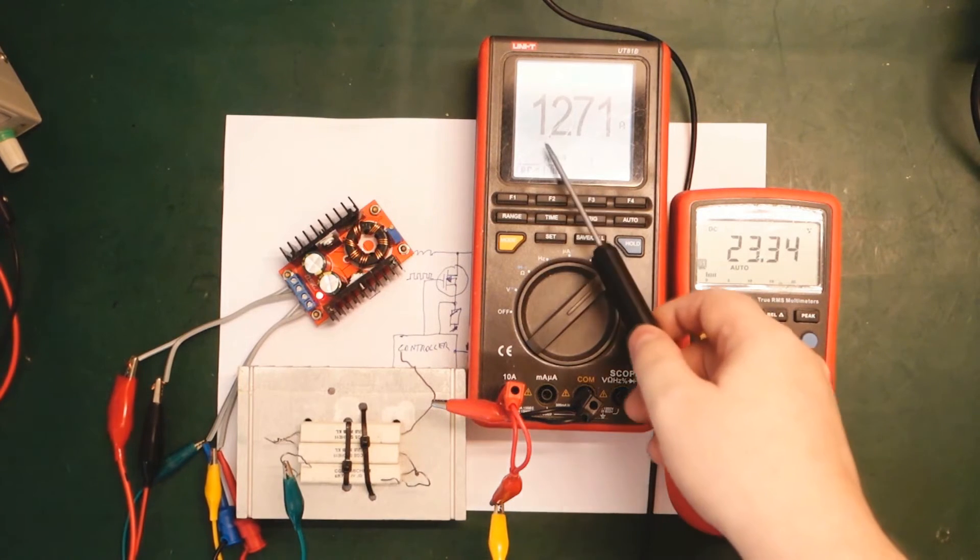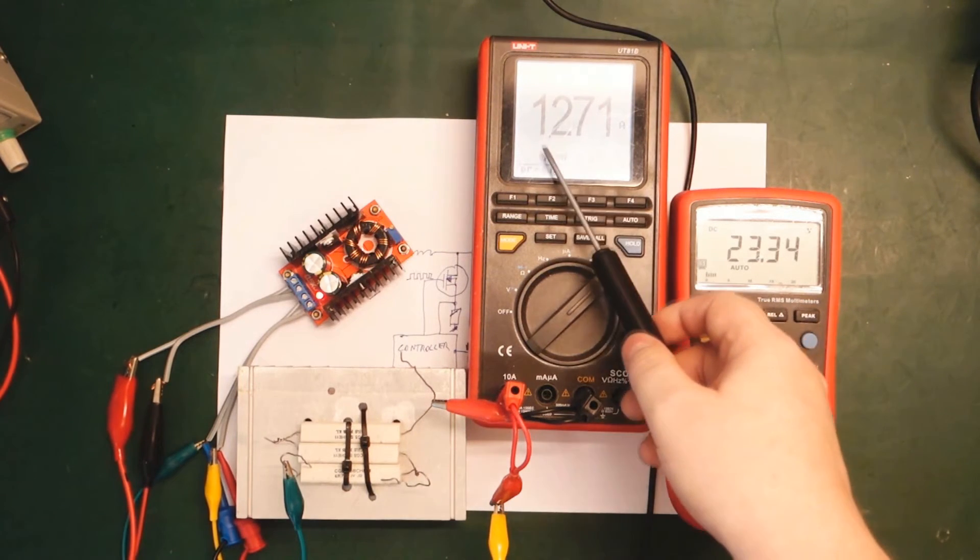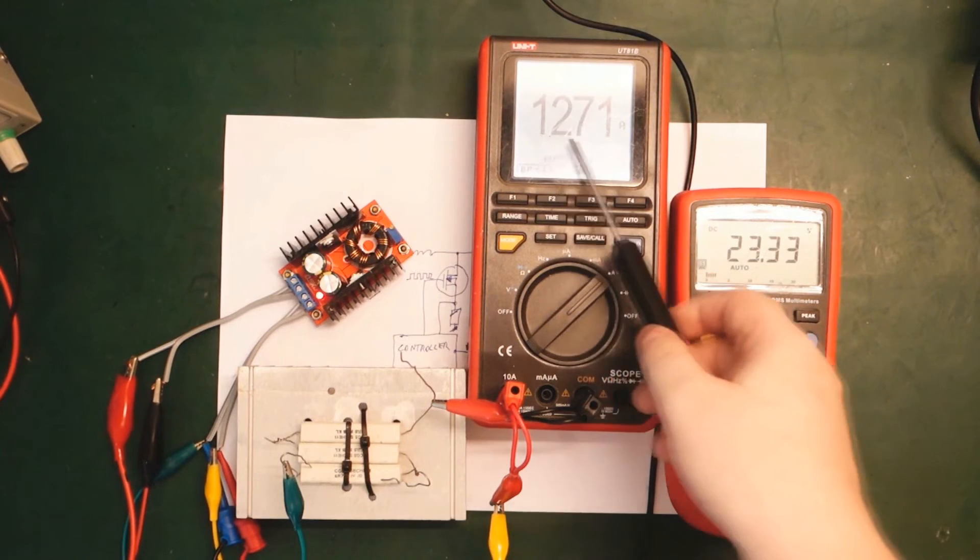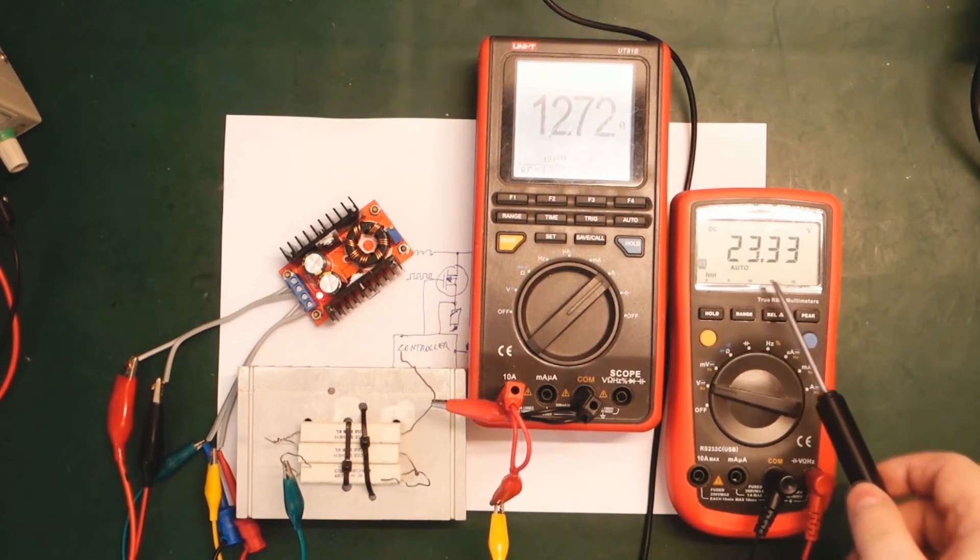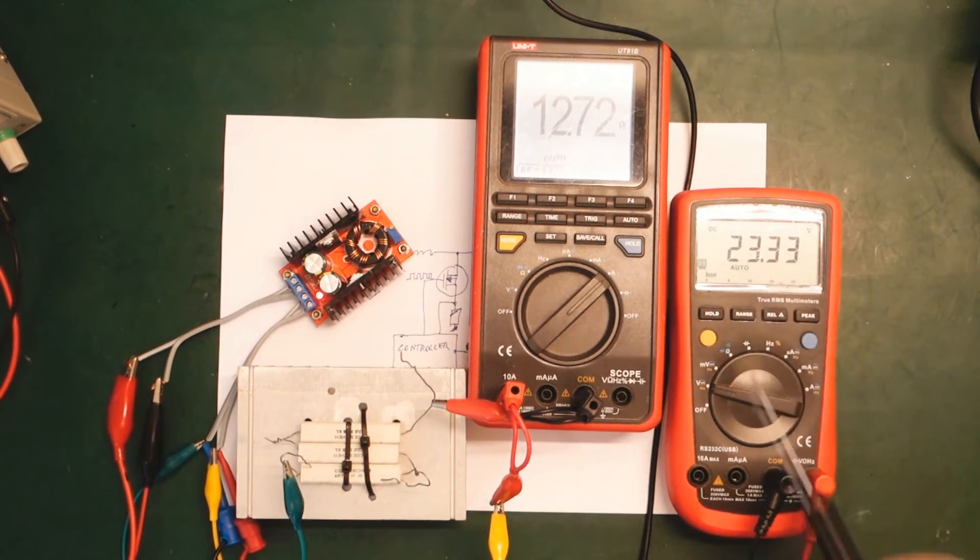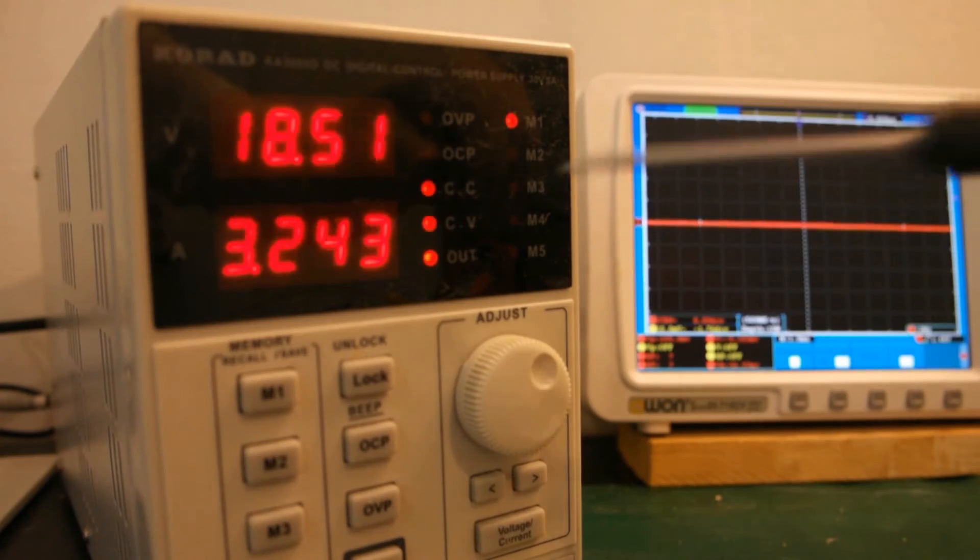We can see now the current draw is about 10 times as much. Nearly 1.27 amps. And the voltage has dropped a little bit. But one thing is, my power supply is going a bit crazy right now. I'll try get a shot on that. You can see here, the power supply is going crazy.